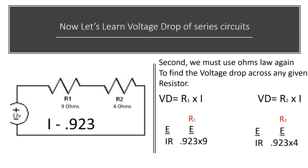On this side here, we plug in the knowns, we know the amperage and the resistance, and we just multiply that, and that's going to give us the voltage drop. So the voltage drop of R1 is 8.3 when we did our multiplication, and the voltage drop of R2 is 3.7.